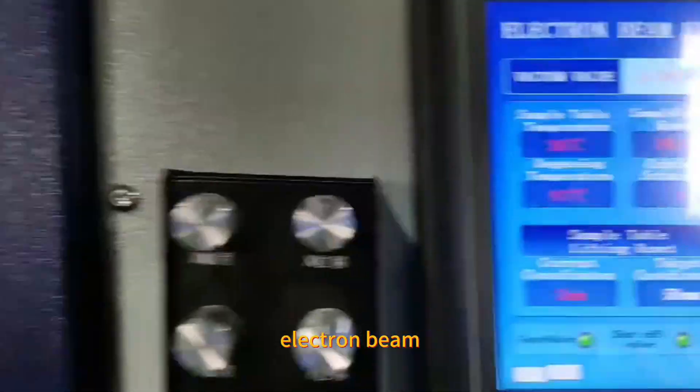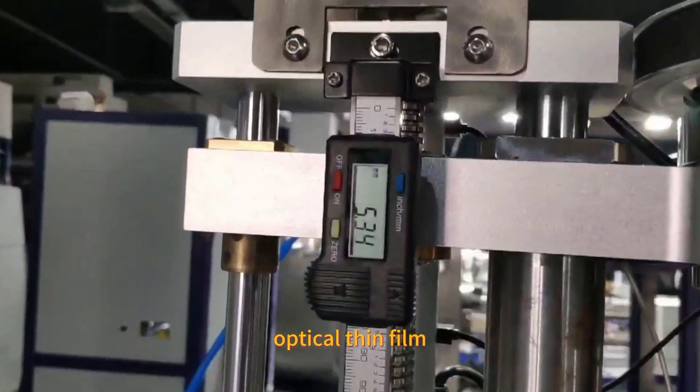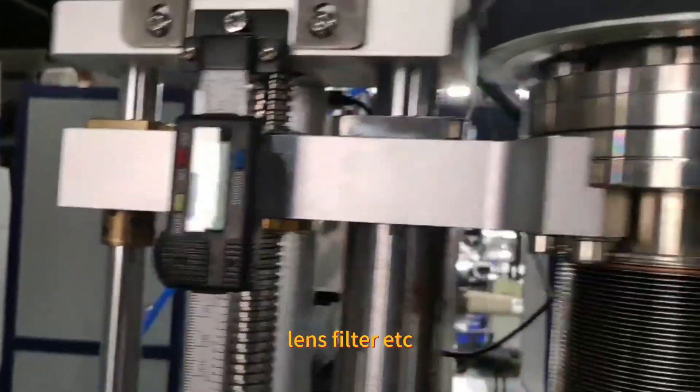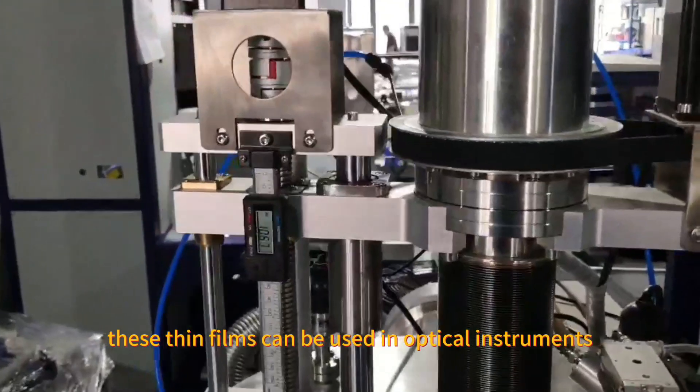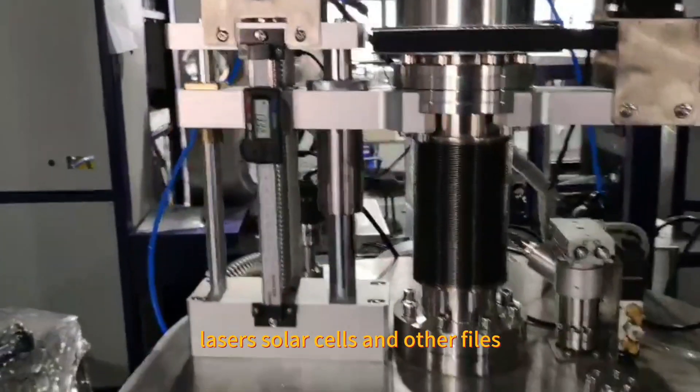Electron beam evaporation coating machines can be used to prepare optical thin films, such as mirrors, lenses, filters, etc. These thin films can be used in optical instruments, lasers, solar cells, and other fields.